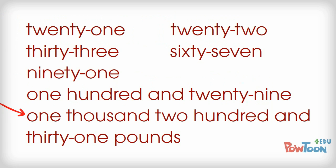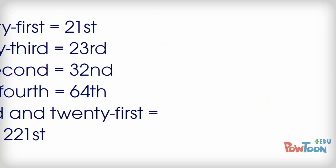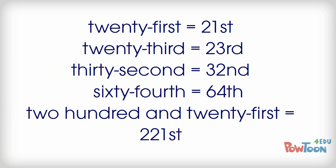This also applies to ordinal numbers from 21, so again we need a hyphen when writing these in words. So 21st, 23rd, 32nd, 64th, 221st, remember no space between the hyphen and words.